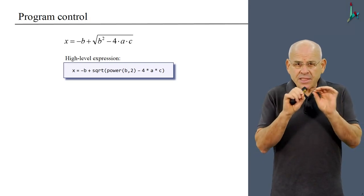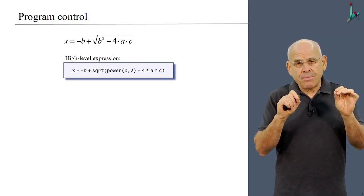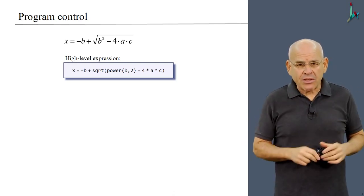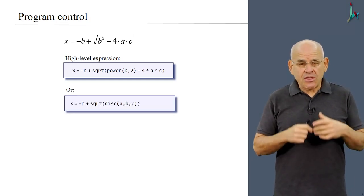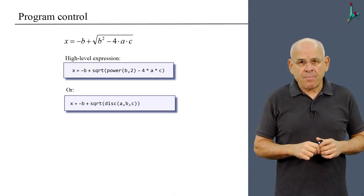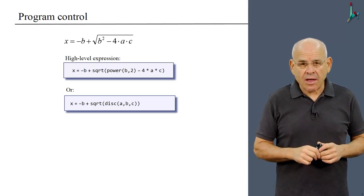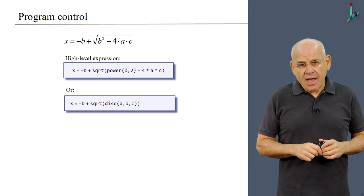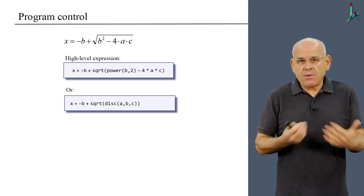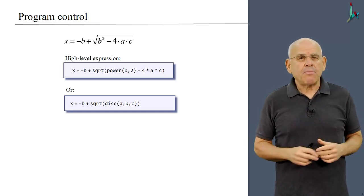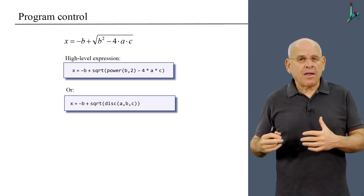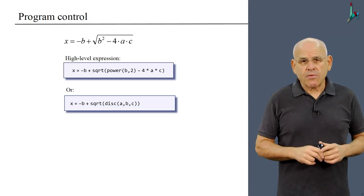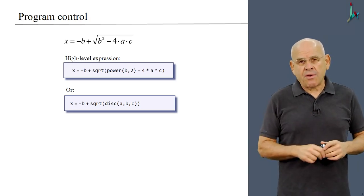Now, this expression that I have here, b squared minus 4ac, is widely used in some branches of mathematics, so perhaps I can generalize what I have here and use a new function called disk for discriminant, because that's the name of this expression in mathematics. And if I have to compute this expression many times in my program, it may make sense to refactor it into a method, give this method or function a name, and use it whenever the need arises.